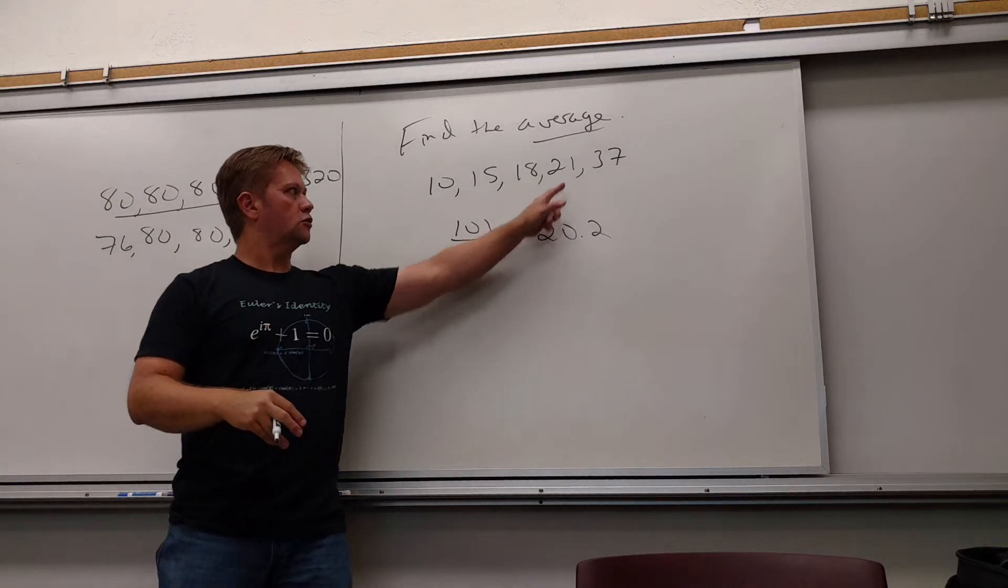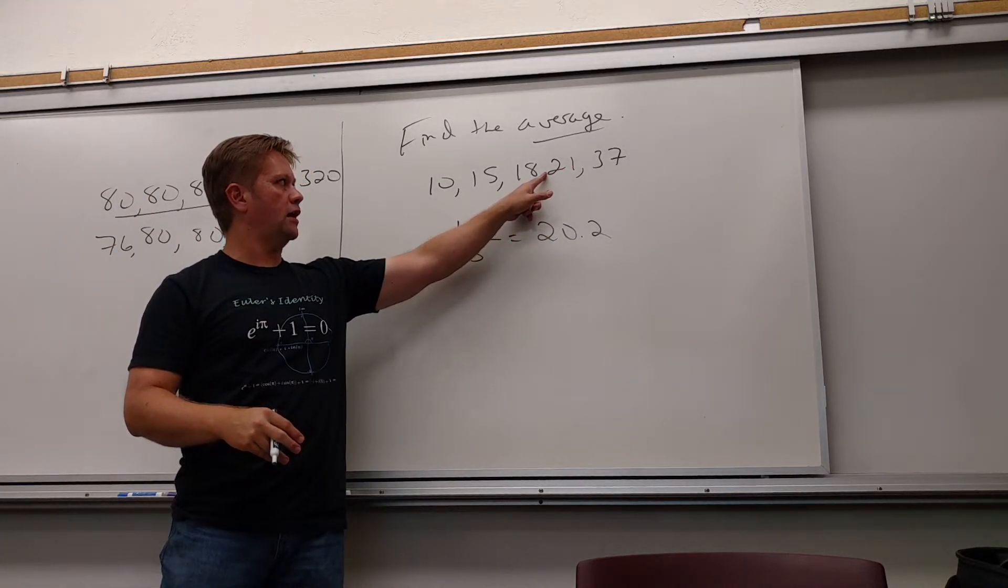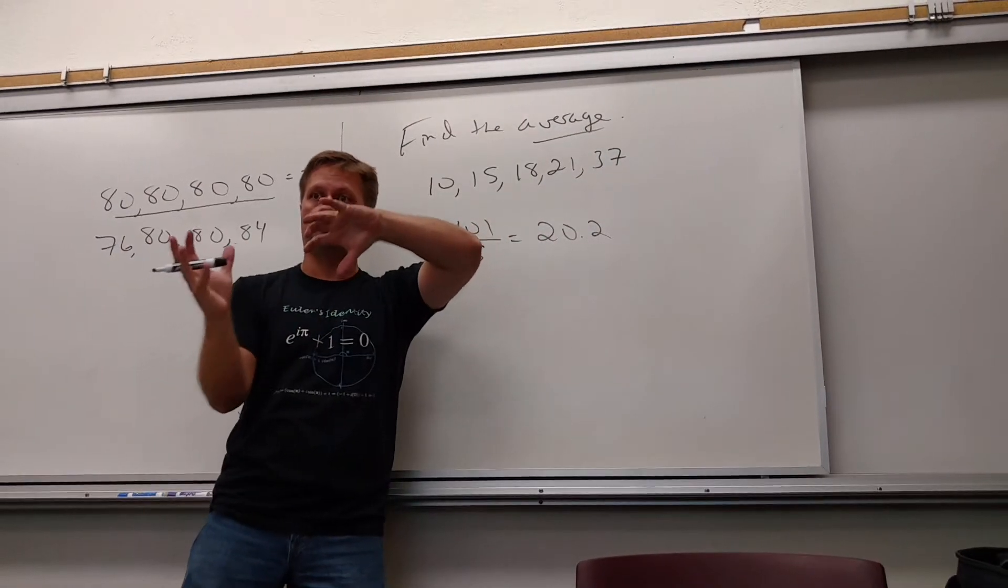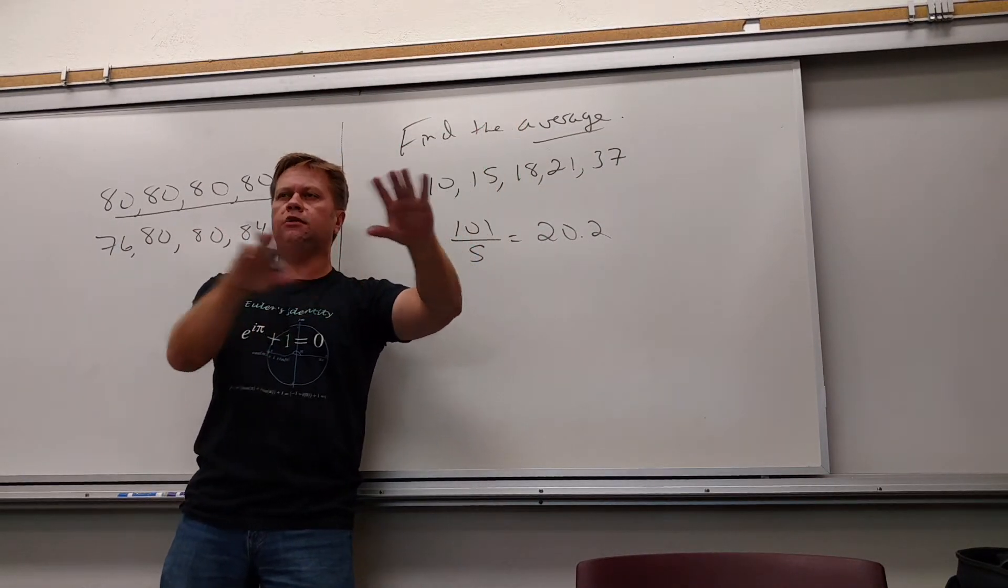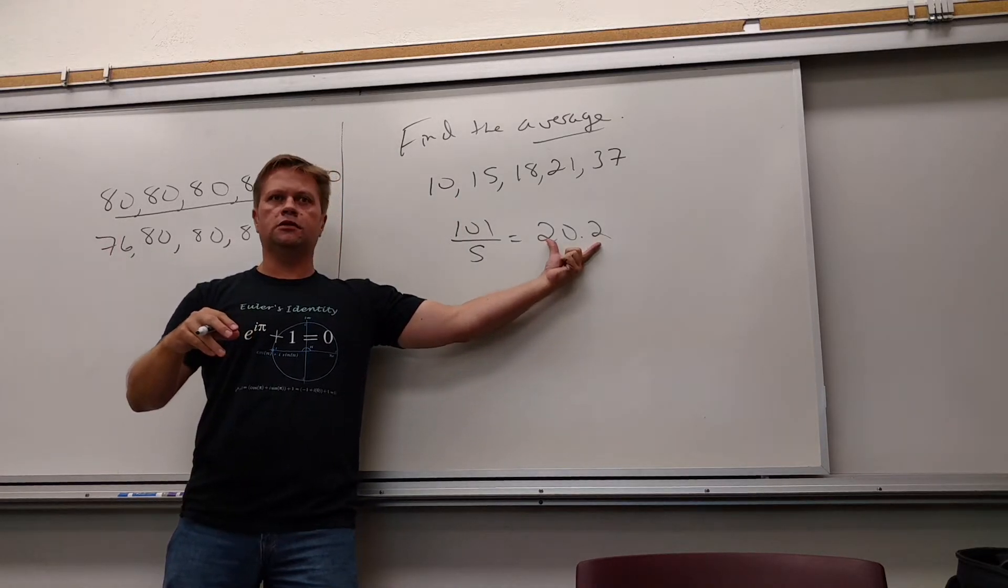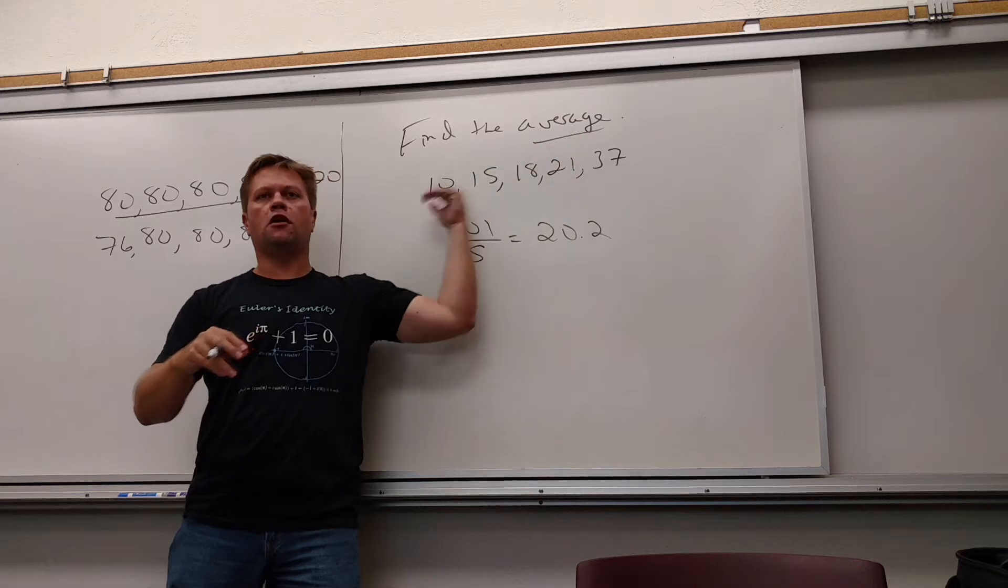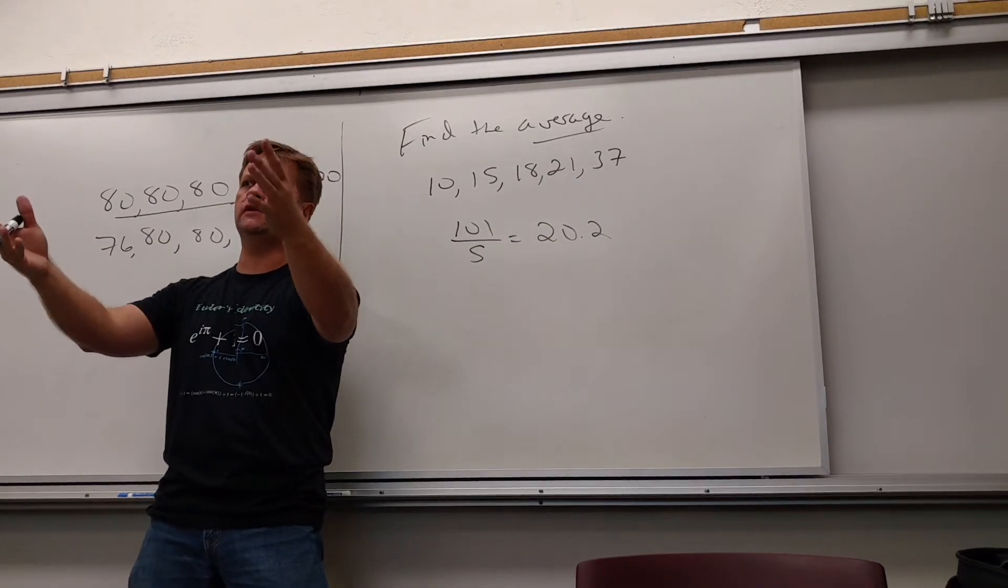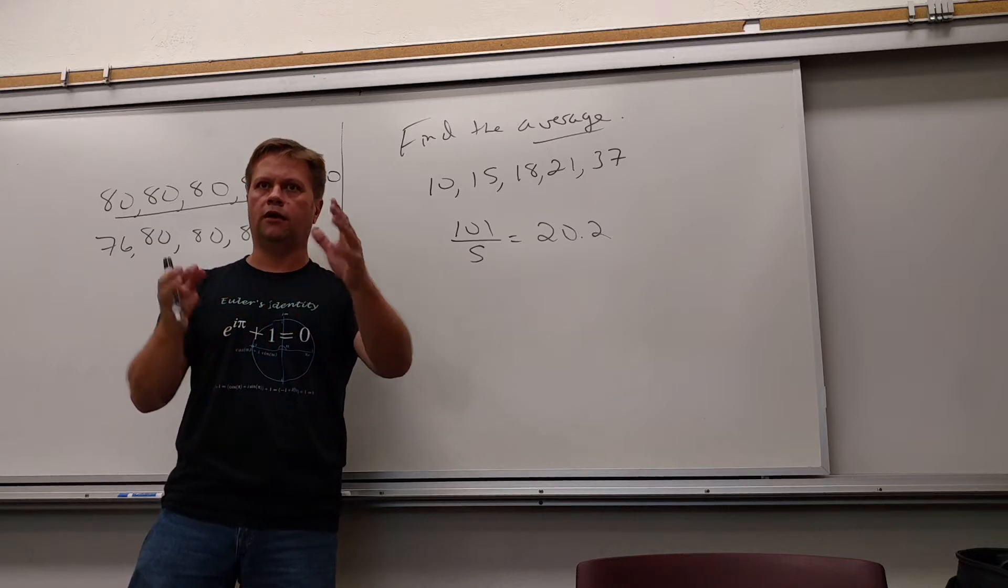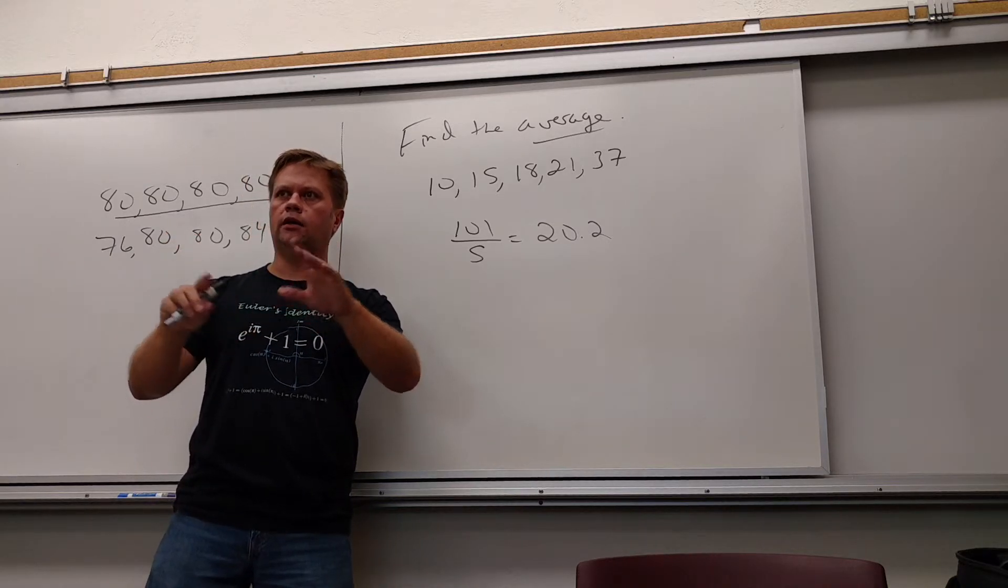And why does it make sense? 20.2, the average is right there because that number kind of is a lot bigger than the other ones. It pulls the average up a bit. Do you need to understand that level? Not really. But 20.2 is the average. It kind of is the middle of all the numbers. And it's, of course, what you guys live by in each class. Your average grade is what you end up with, right?